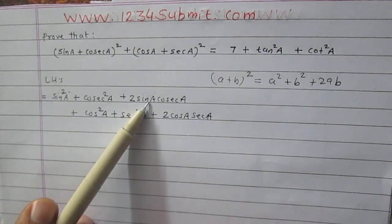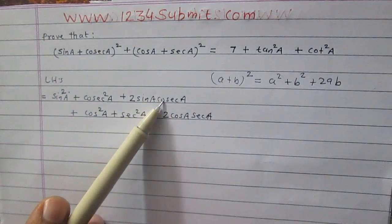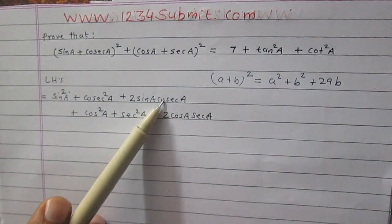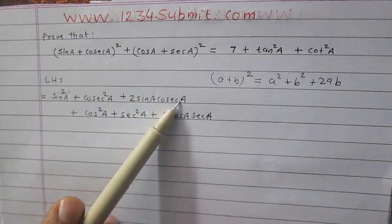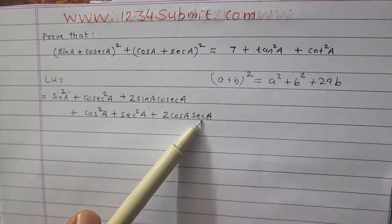Second, sin a is in multiplication with cosec a. Sin a and cosec a are reciprocal of each other, so the result is 1. Similarly, cos a multiplied by sec a gives 1.